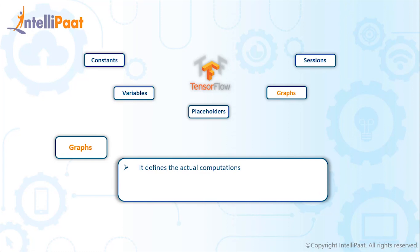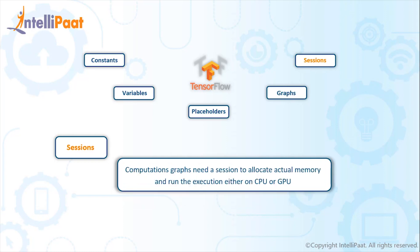A graph is the most important object in TensorFlow because it defines the actual computation. It does not perform any computation nor hold any values — it simply defines what needs to be done. Finally, sessions are used to take care of memory allocation. These are the objects used in TensorFlow, and knowing them is essential if you want to progress in deep learning.